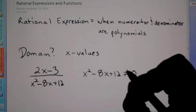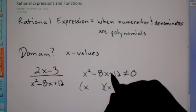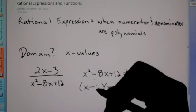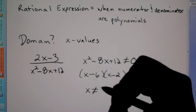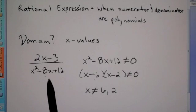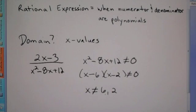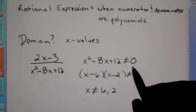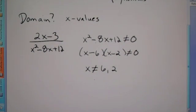Take the denominator and set it not equal to 0. Factor it into two parentheses — since it's a plus, that means same symbols inside, so it's minus-minus. Factors of 12 that add up to 8 are 6 and 2. So the domain is: x can be anything except x cannot be 6 and x cannot be 2, because those values make the denominator equal to 0, which makes the whole expression undefined. Any other x value will work.